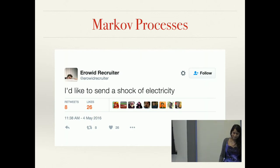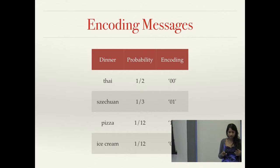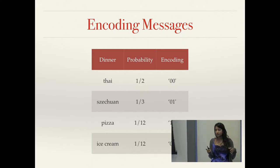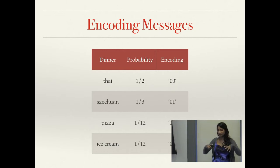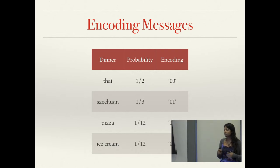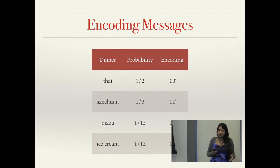Now that we've discussed the underlying structure a message like English text might contain, let's pick a simple example. Say I want to get dinner and I'm trying to communicate this to a friend. I'm fairly predictable — most of the time I just want Thai, but with a very small probability I will have ice cream for dinner because I'm an adult.